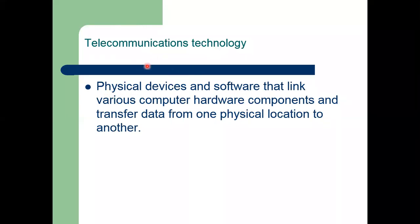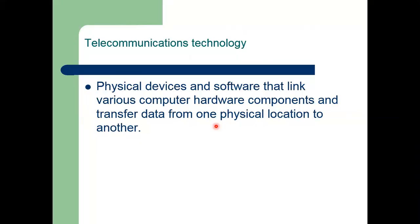Telecommunication technology consists of physical devices and software that link various computer hardware components and transfer data from one physical location to another. We connect computing devices by wired or wireless media so that we can send data from one point to another — transmitting and receiving data or information from one source to another destination. In your homes you have routers and switches; these are physical networking and telecommunication devices that enable communication from any location to any location on the globe.